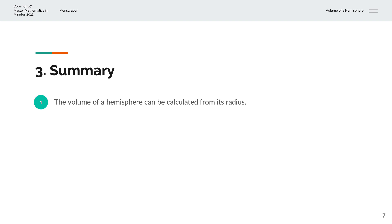To summarise, the volume of a hemisphere can be calculated from its radius, with the formula V = 2/3 × π × r³. Thank you very much for watching. This is Master Mathematics Minutes.